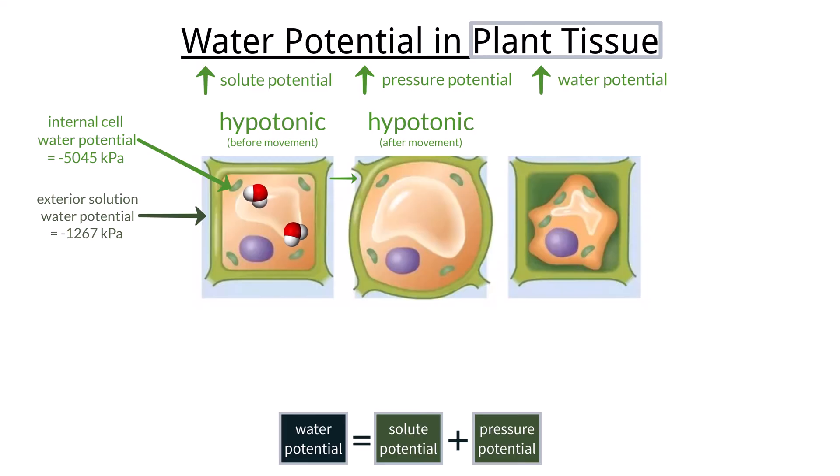Now we can flip the script on the next example and make the solution hypertonic. This means that there is a higher solute concentration within the solution compared to the internal cytoplasm of the cell. Using more fictional numbers as an example, let's say the solution has a water potential of negative 7540 kPa and the plant cell has the same water potential of negative 5045 kPa.